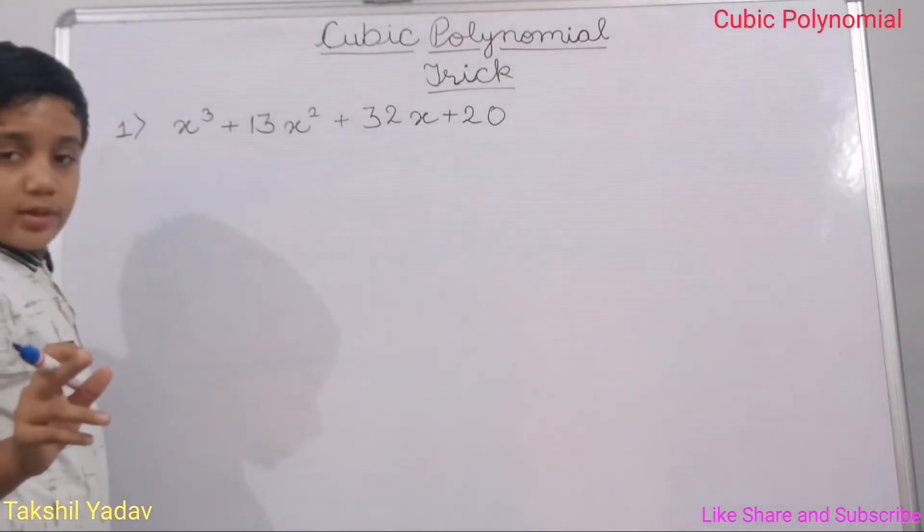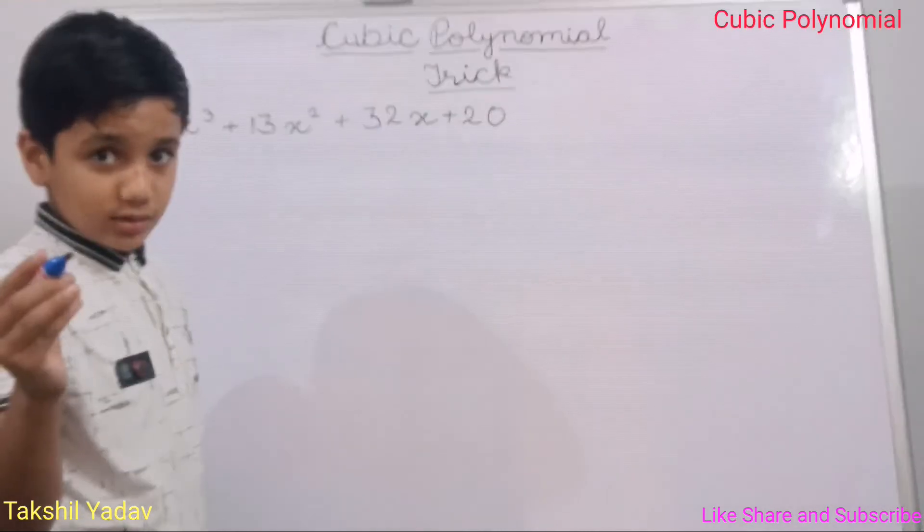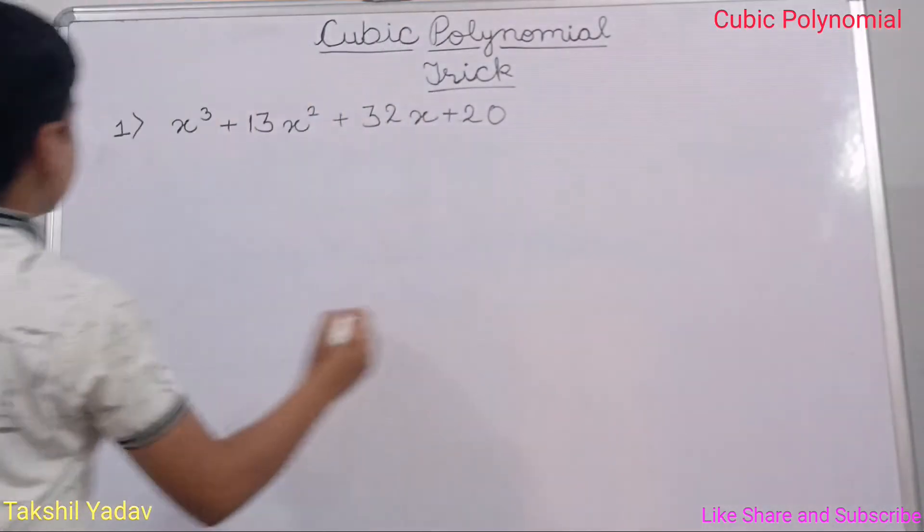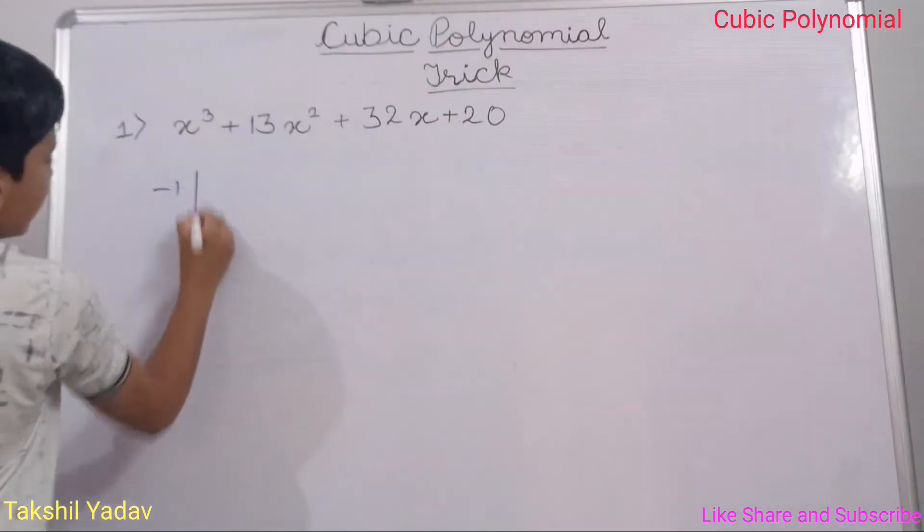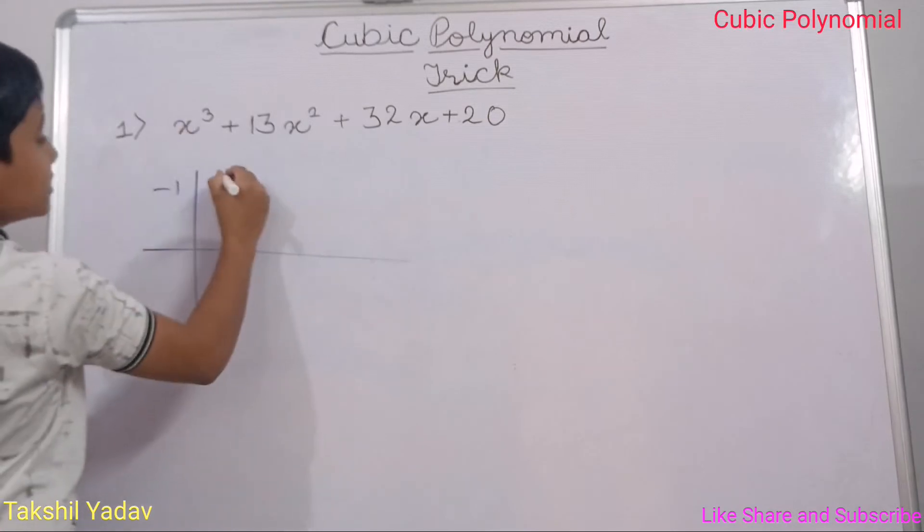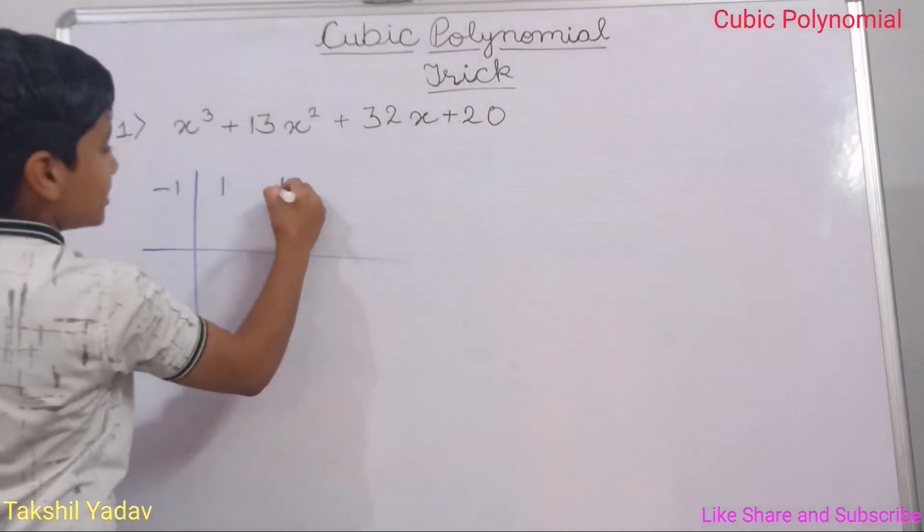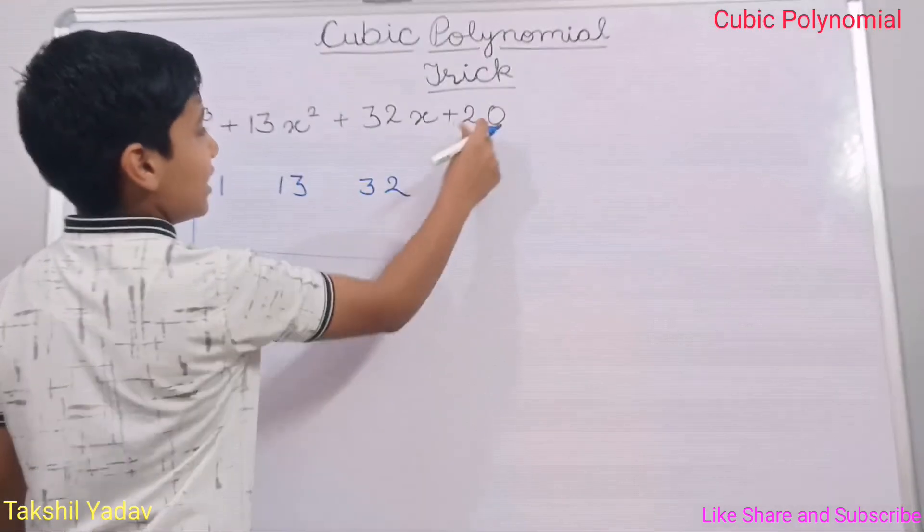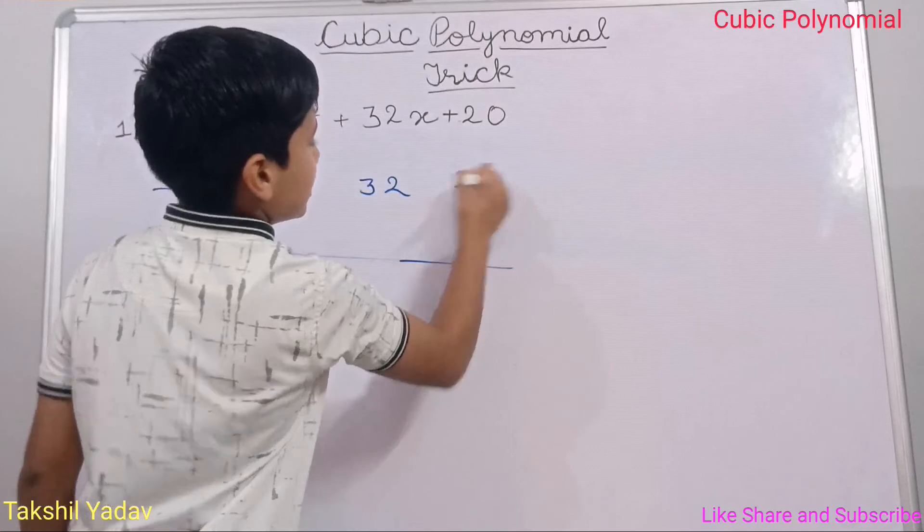Here, do you remember that the factor was x + 1 and the zero was negative 1, right? So here, I will write negative 1 and the line and another line. And here, what is the coefficient of x³? That is 1. 13x², it is 13. 32x, it is 32, and the last is the same, 20.